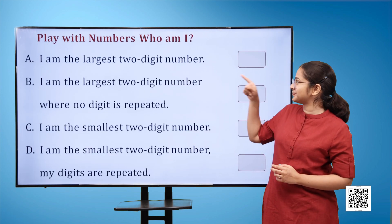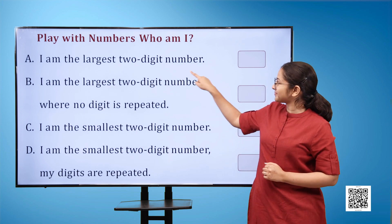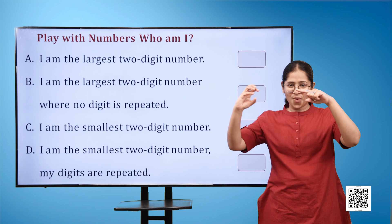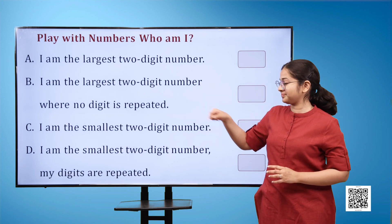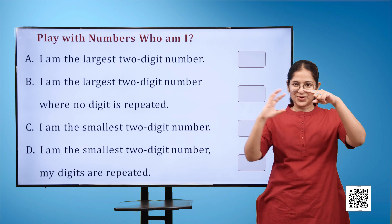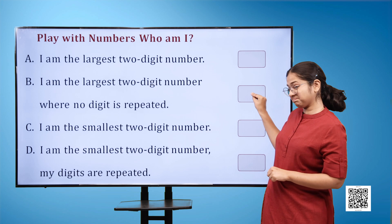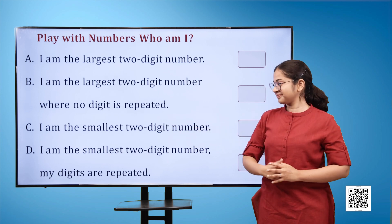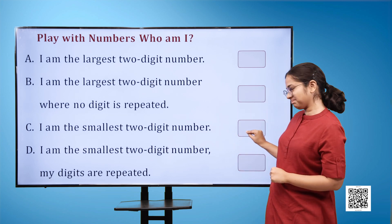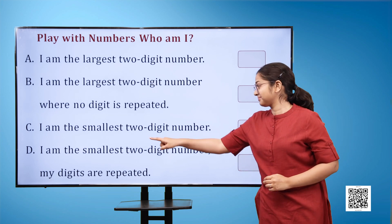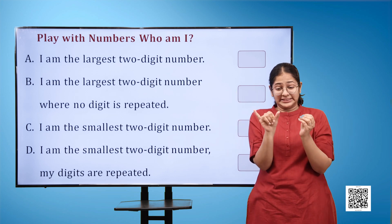Play with numbers. Who am I? A) I am the largest two-digit number blank. B) I am the largest two-digit number where no digit is repeated blank. C) I am the smallest two-digit number blank. D) I am the smallest two-digit number. My digits are repeated blank.